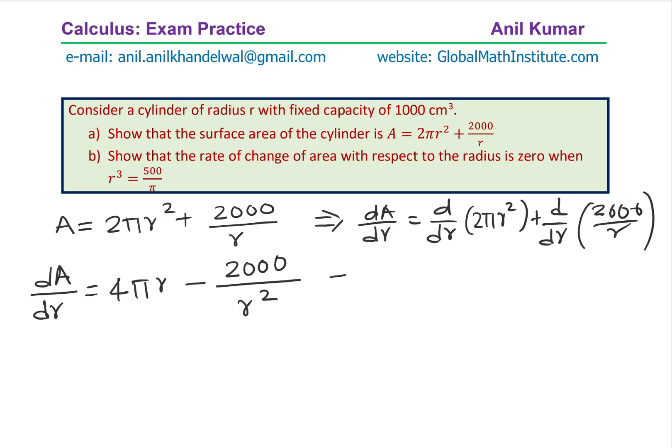So basically what I did was at this stage, we are showing dA/dR = d/dR(2πR²) + d/dR(2000/R). And that is the derivative. Now, if we equate it to 0, then we need to show that R values this. That is the equation. So let's equate to 0.